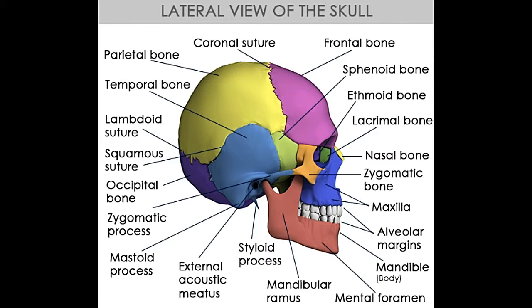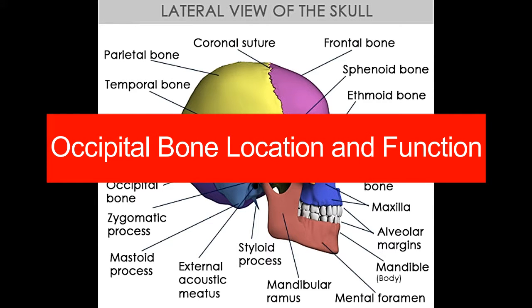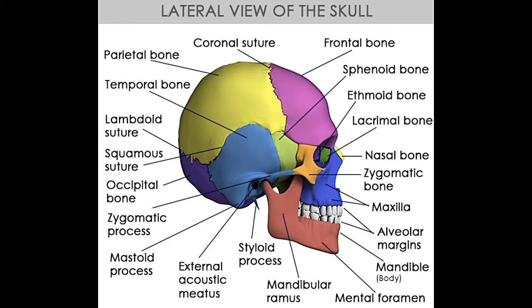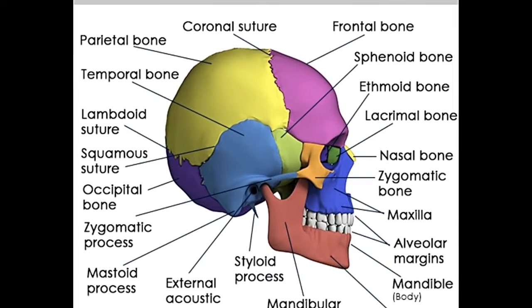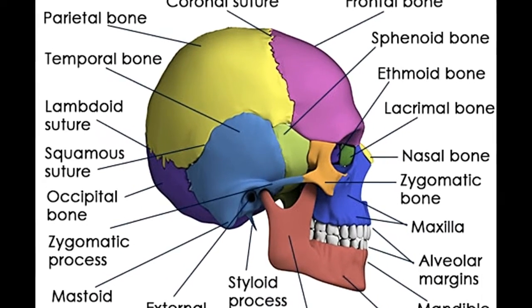The occipital bone is located at the lower section of the back of the skull. It is convex shaped externally and concave shaped internally. It is divided into four regions that surround the foramen magnum, which is a large hole located at the center of the occipital bone. The four regions include the basilar part (pars occipitalis), two condylar sections, and the squama occipitalis. At birth, these parts develop separately and are joined by cartilage, forming a ring around the foramen magnum. It is only around the age of six years that these four parts unite to form a single bone.